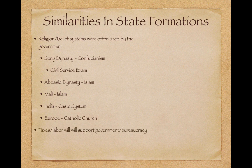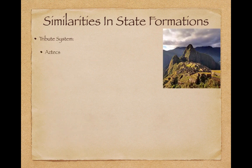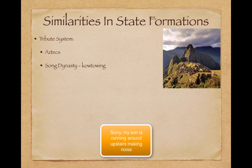Taxes and labor were also used to support government and its bureaucracy. Taxes in Song China played a very large role in paying for the large bureaucratic government structure. In the Incas we have the Mita system, which is labor given to the government. The tribute system was also used with the Aztecs and the Song Dynasty, including kowtowing — bowing to Chinese leaders.